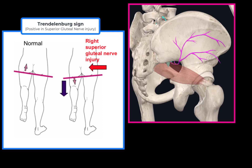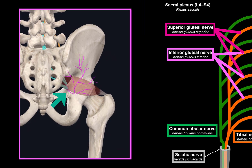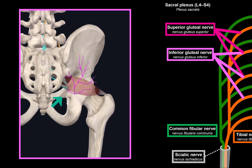The Trendelenburg sign is demonstrated by asking the patient to stand on the affected leg — the unsupported side of the pelvis drops lower than the standing side. The inferior gluteal nerve comes from the anterior branches of L5, S1, and S2, runs through the infrapiriform foramen, and innervates the gluteus maximus, which provides extension and external rotation at the hip. Paresis results in impaired hip extension, making it difficult to walk upstairs.